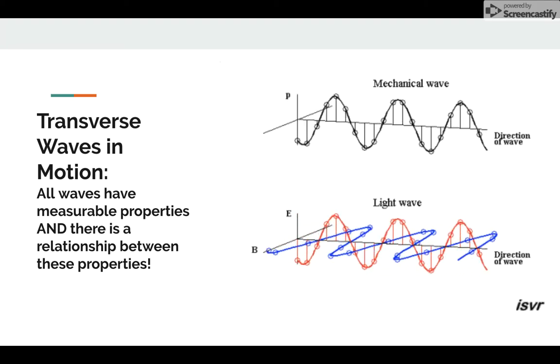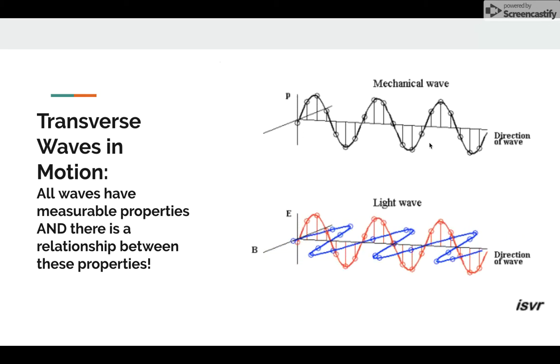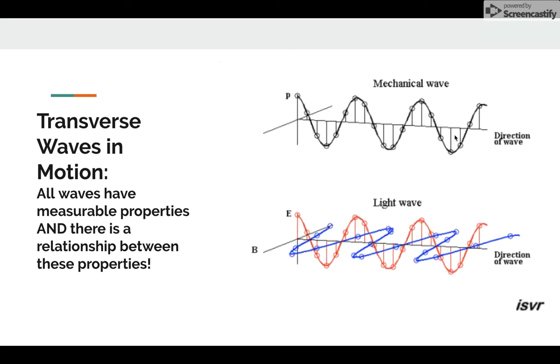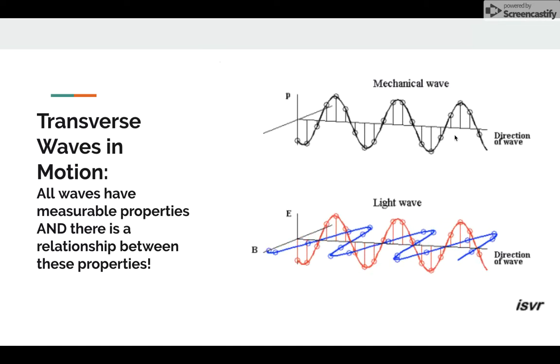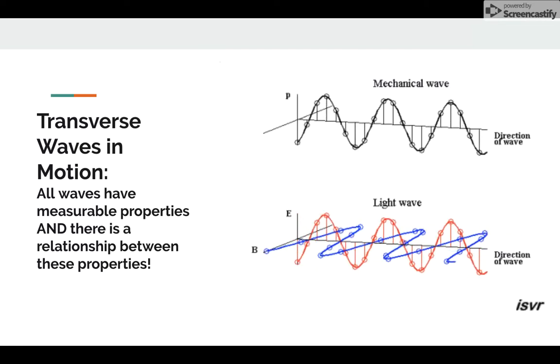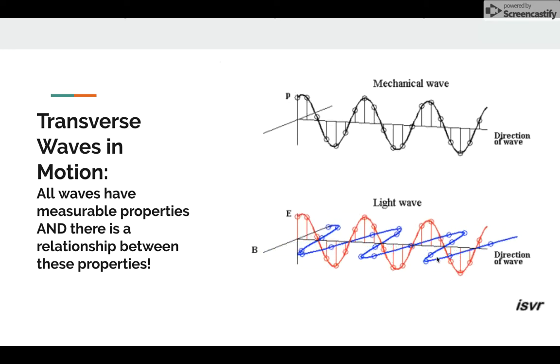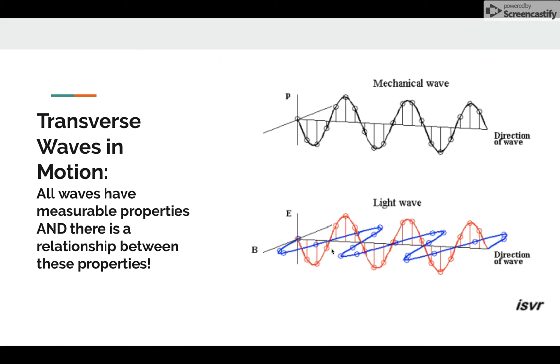You already know that transverse waves have crests and troughs. If a transverse wave is moving through a rope like this top animation, it's considered a mechanical wave. This week you learned that light waves are two-part transverse waves like the ones shown below, moving perpendicular to one another, but light does not need a medium.